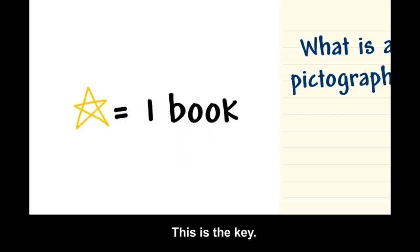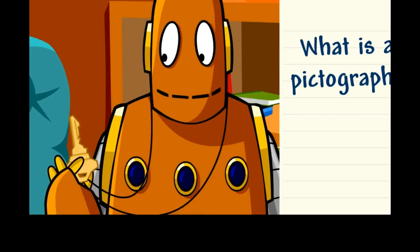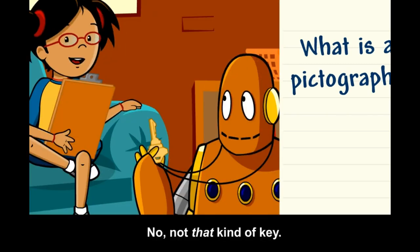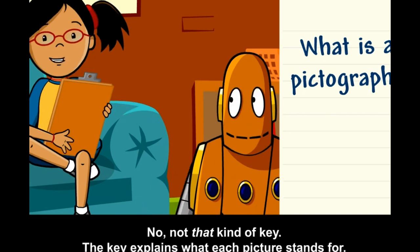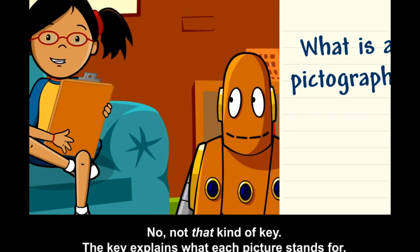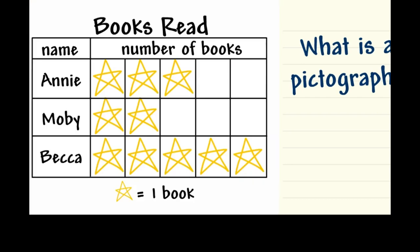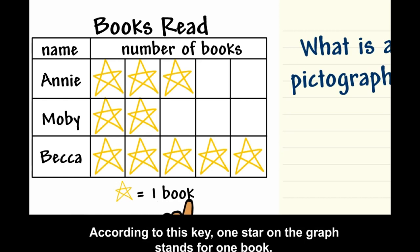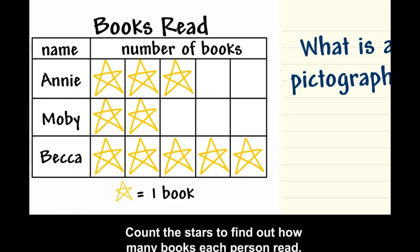This is the key — not that kind of key. The key explains what each picture stands for. According to this key, one star on the graph stands for one book. Count the stars to find out how many books each person read.